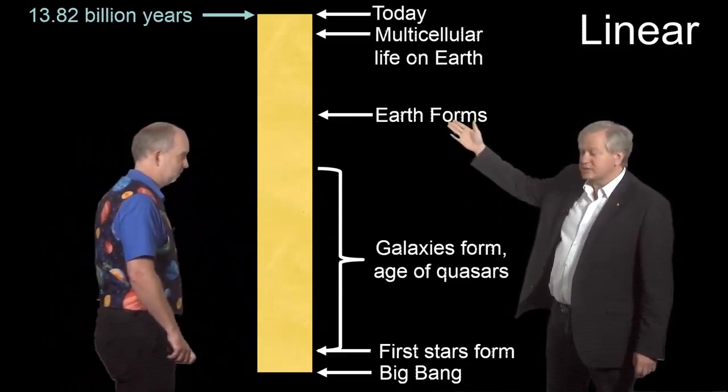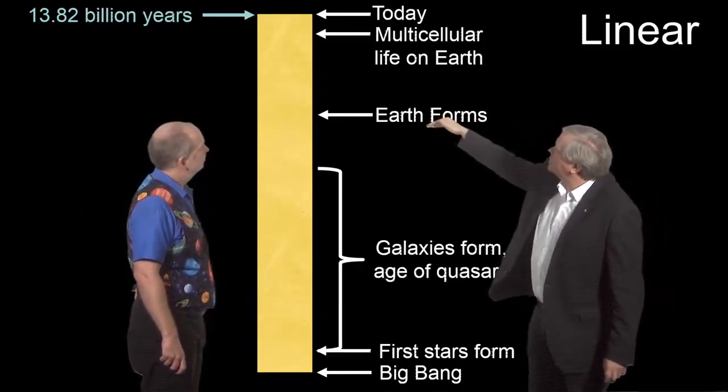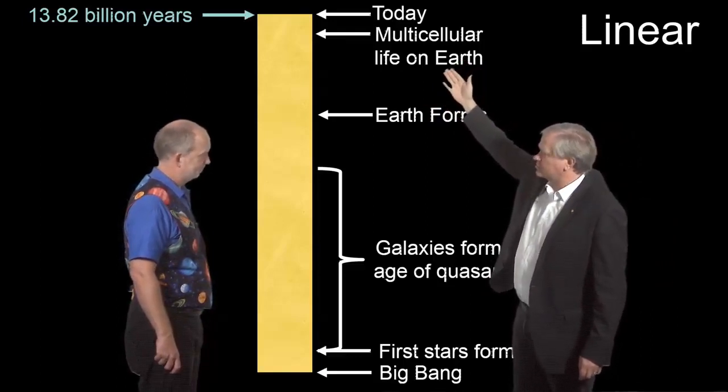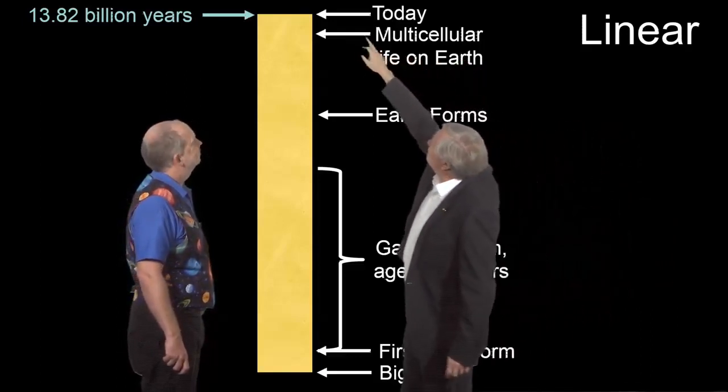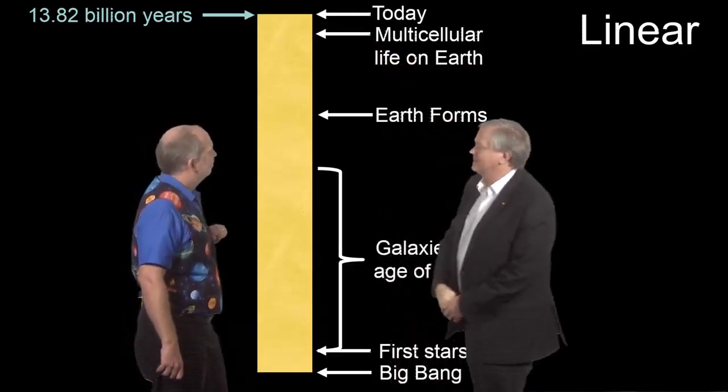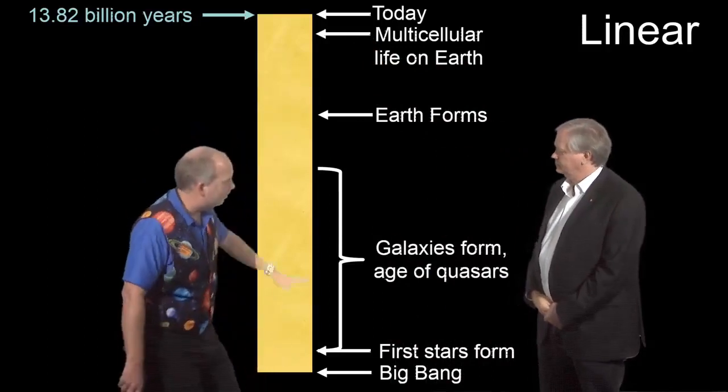The Milky Way formed somewhere in here. Earth forms around here, about eight billion years after the Big Bang, maybe seven. And then of course the interesting thing here is that all the action on earth that we're interested in - I mean, even the dinosaurs are right up there. Humanity, homo sapiens, modern human sapiens, is about three minutes to midnight if you treat this as an entire year.